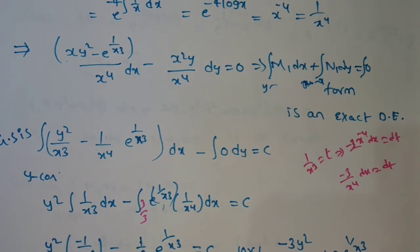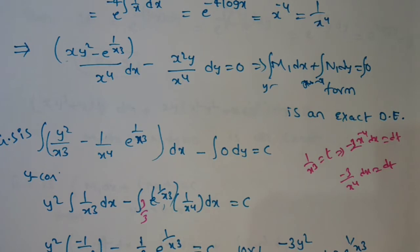On simplifying with LCM 6: −3y²/x² − 2e^(1/x³) = c₁, where c₁ = 6c. That is the general solution to the first problem.